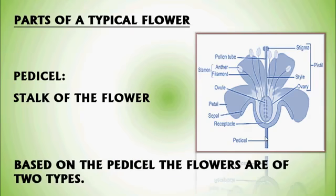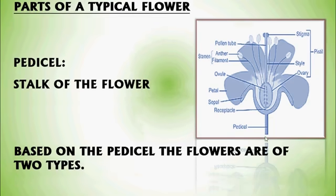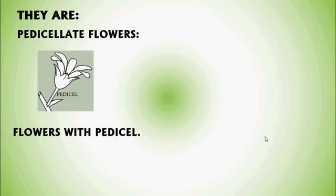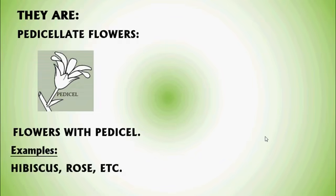Based on the Pedicel, flowers are of two types. The first type is Pedicellate flowers, defined as flowers with a Pedicel. Examples: Hibiscus, Rose, etc.